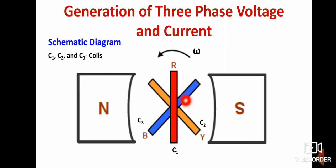Moving to the second part, we have three coils. The coil with red color is denoted by C1, the coil with yellow color is denoted by C2, and the coil with blue color is denoted by C3.